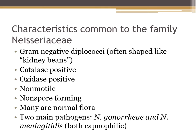They are non-motile and non-spore forming, and many are normal flora. There are many non-pathogenic Neisseria including Neisseria sicca, Neisseria lactamica, and Neisseria elongata. However, the two most important pathogens we're going to talk about in this unit are Neisseria gonorrhoeae and Neisseria meningitidis.